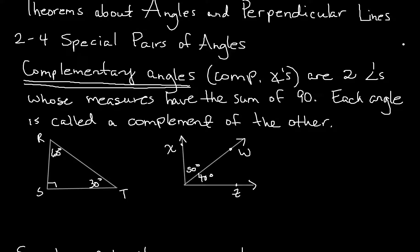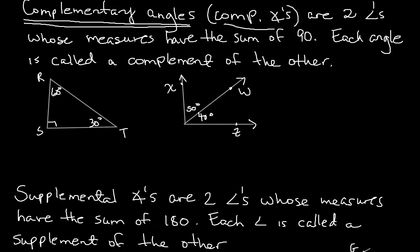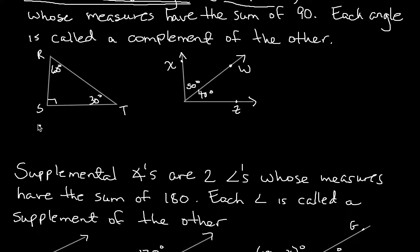The first definition we're going to talk about today is Complementary Angles — I think you've already learned these in Algebra 1. Complementary Angles (abbreviated comp.) are two angles whose measures have the sum of 90. Each angle is called the complement of the other. I have two examples here of Complementary Angles. Angle R and Angle T are complementary. Sometimes they're in a triangle; sometimes they're just in an angle together.